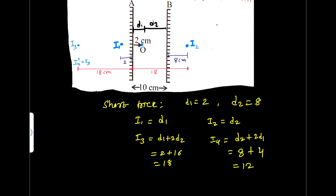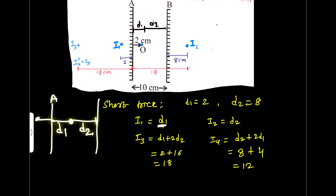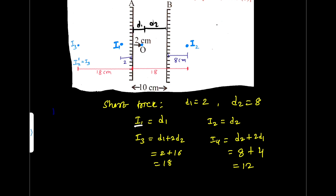Now let us understand the short trick. If we have two mirrors — mirror 1 and mirror 2 — with the object at distance d1 from mirror 1 and d2 from mirror 2, then the first image formed by mirror A is at distance d1, and the first image formed by mirror 2 is at distance d2. The second image overall is the first image formed by mirror 2.